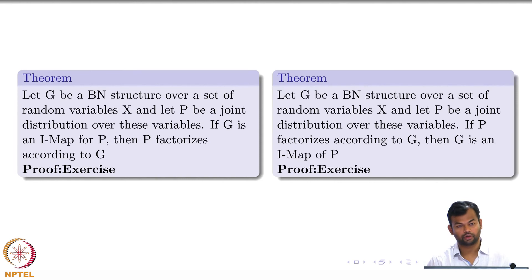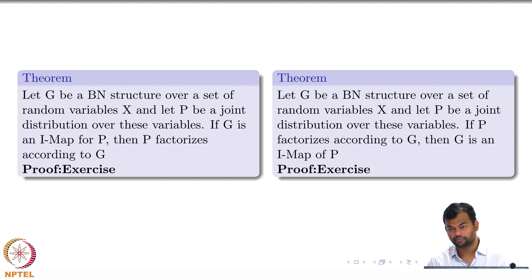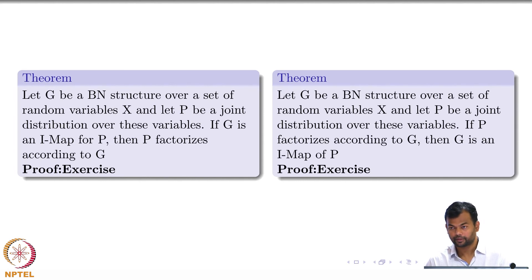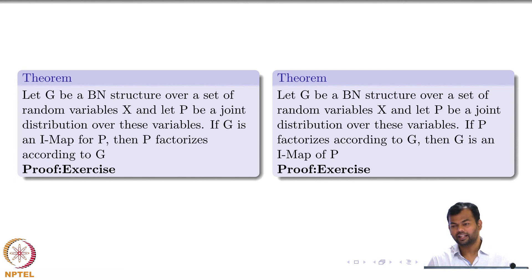Here are two theorems on Bayesian networks. First: if G is a Bayesian network over random variables X and P is a joint distribution, then if G is an IMAP for P, then P factorizes according to G. Second, the converse: if P factorizes according to G, then G is an IMAP of P. You can go back and check these two theorems — they will help improve your understanding. This is why IMAPs are important.